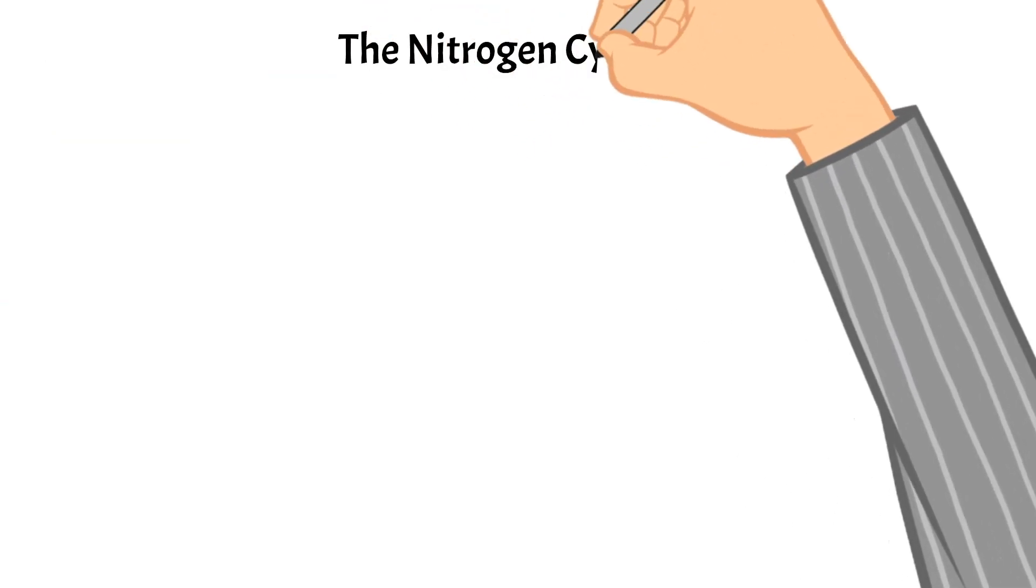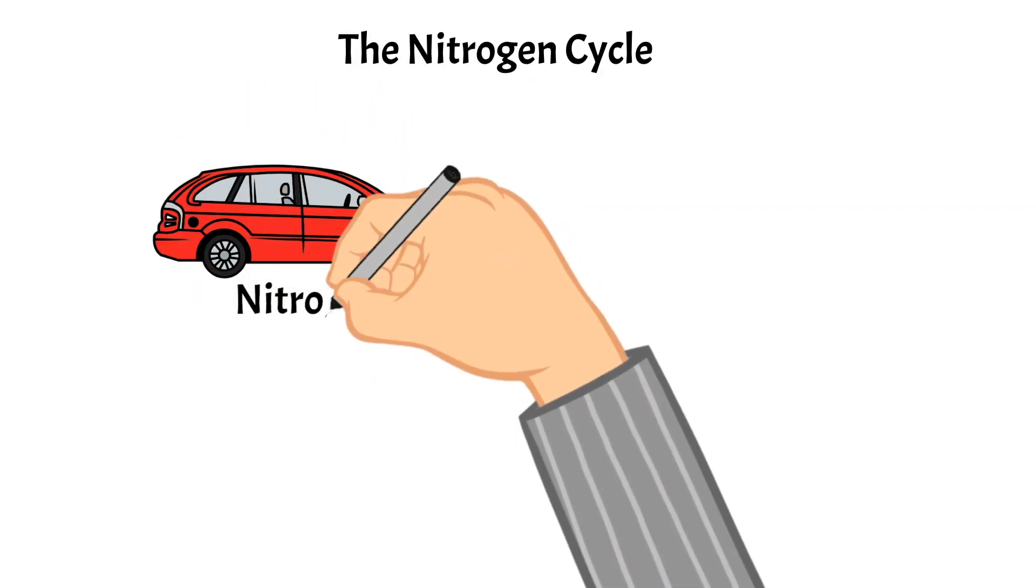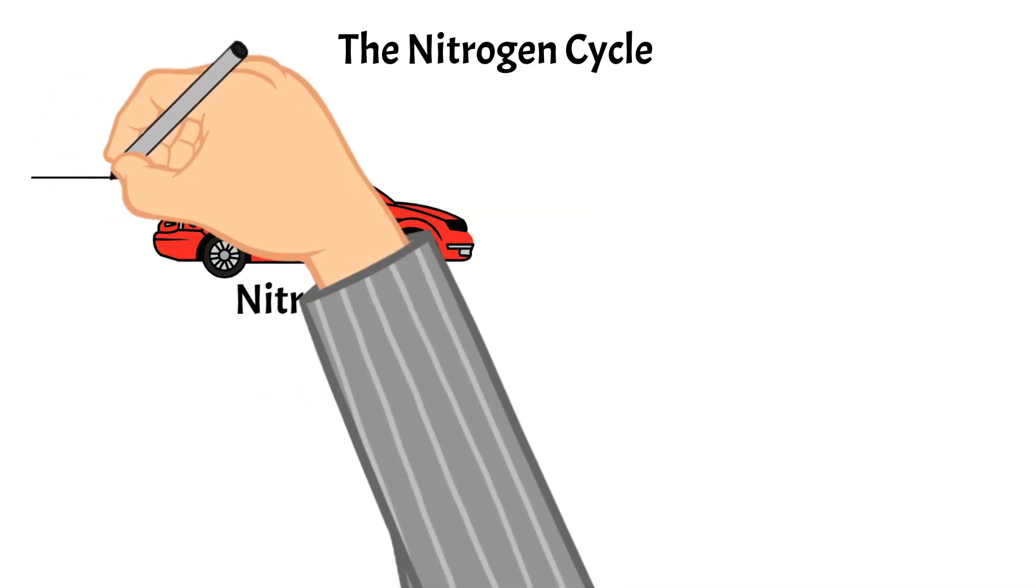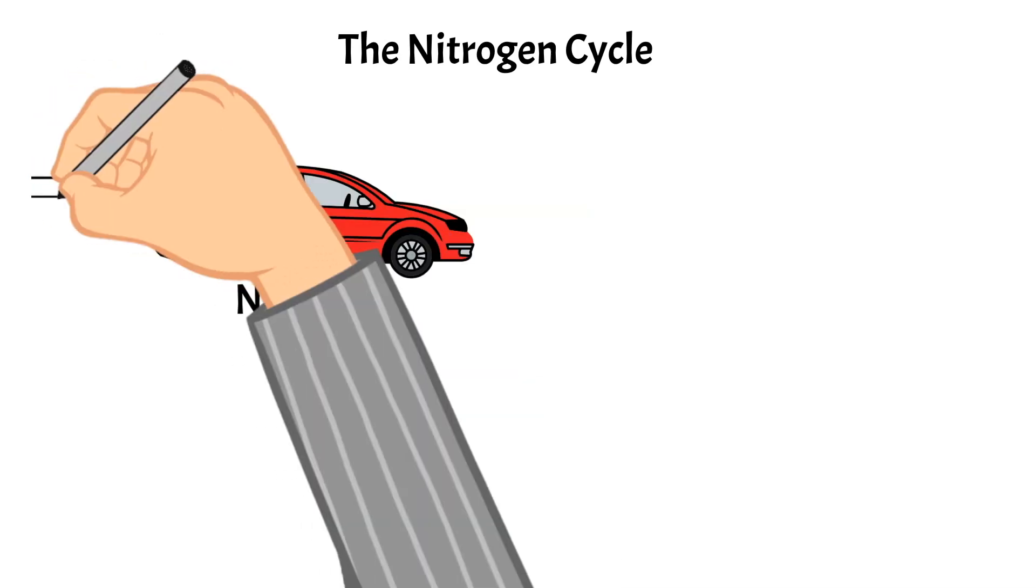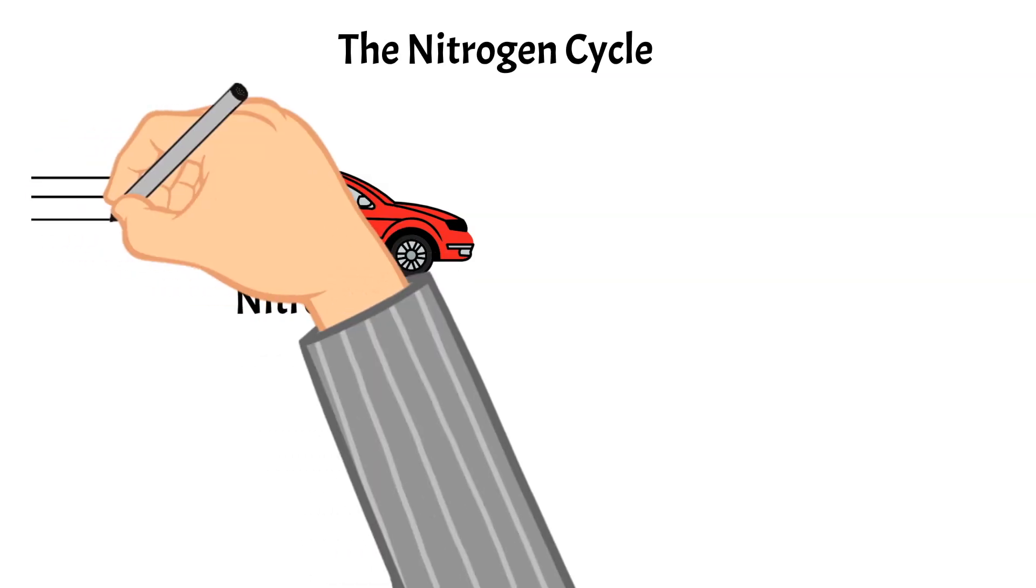Now let's talk about the nitrogen cycle. Nitrogen moves between plants, animals, bacteria, and the air and soil in the ground. And so it is also an important element to life on earth.